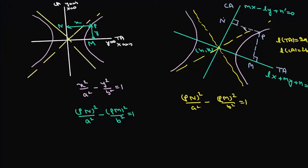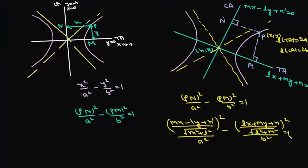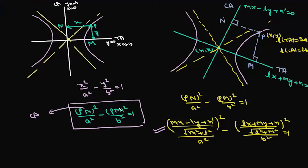Here, Pn is the perpendicular distance from line mx - ly + n' = 0 to a point P with coordinates (x, y), giving Pn = |mx - ly + n'| / √(m² + l²). Substituting into Pn²/a² - Pm²/b² = 1 gives the required equation of the hyperbola, where Pn is the distance from the conjugate axis and Pm is the distance from the transverse axis.